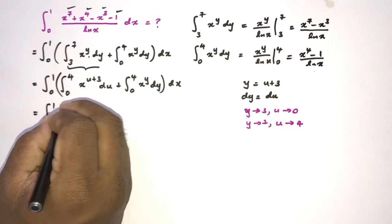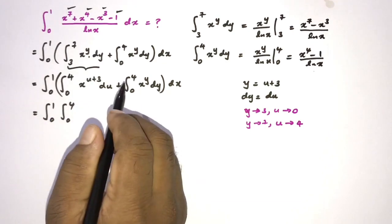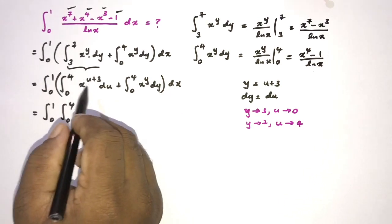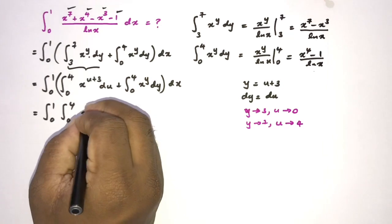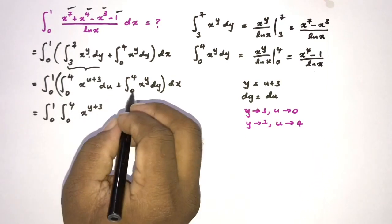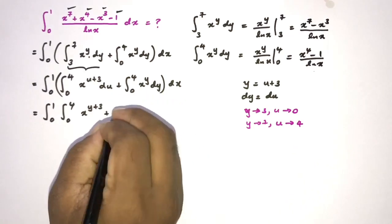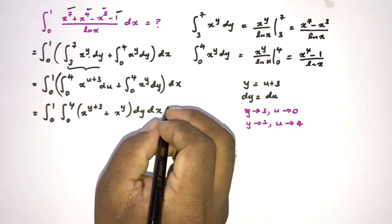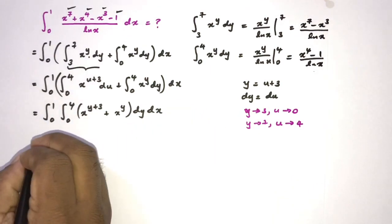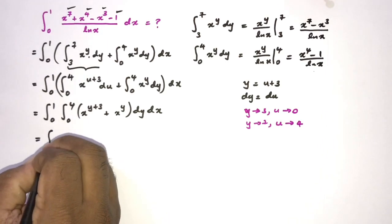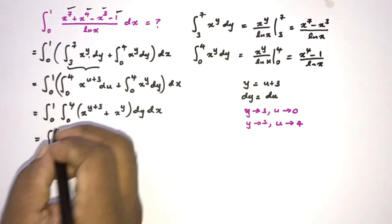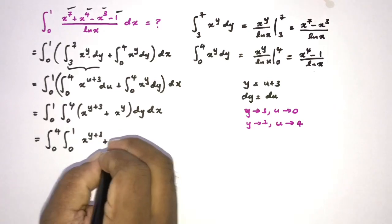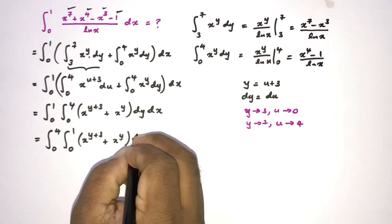Since a definite integral is independent of its variable name, we can replace u with y in the first integral. So we have the integral from 0 to 1 of the integral from 0 to 4 of x to the y plus 3 plus x to the y, dy dx. We can interchange the order of integration, giving us the integral from 0 to 4 of the integral from 0 to 1 of x to the y plus 3 plus x to the y, dx dy.